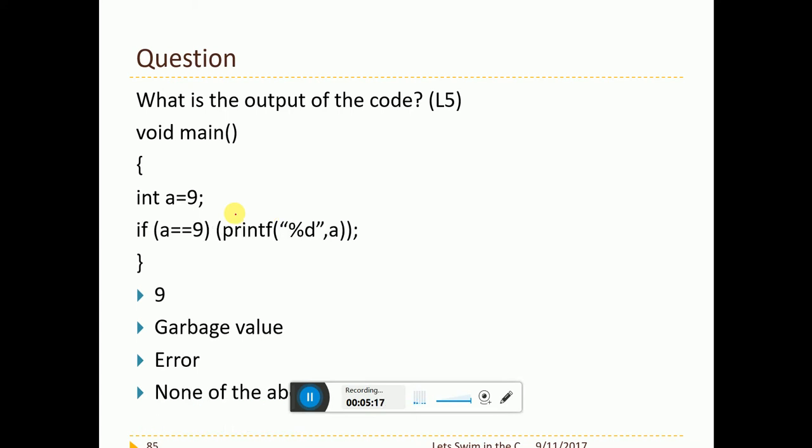Now, if a equal to 9, printf in the bracket percentage d comma a and you are closing the bracket. Is it right? Yes, this is right. This will work fine. This is called one line if statement with a following statement. This is absolutely fine. This is called one line if. So output will be a.